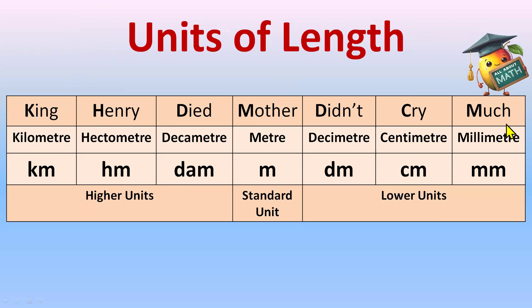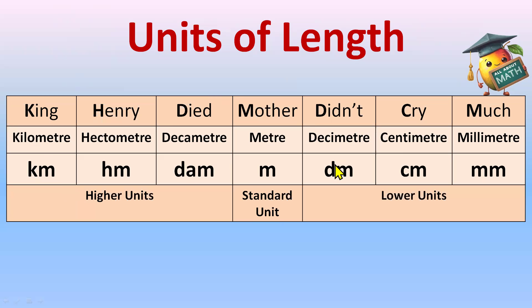These are the abbreviations for all these units, and you need to remember the sequence exactly like this. These are the high units, meter is the standard unit, and these are the lower units. The mnemonic is: King Henry died, mother didn't cry much. Died is for decameter and didn't is for decimeter. Remember this.